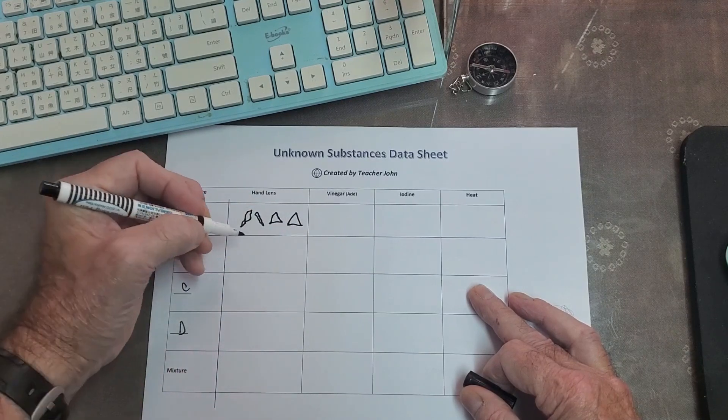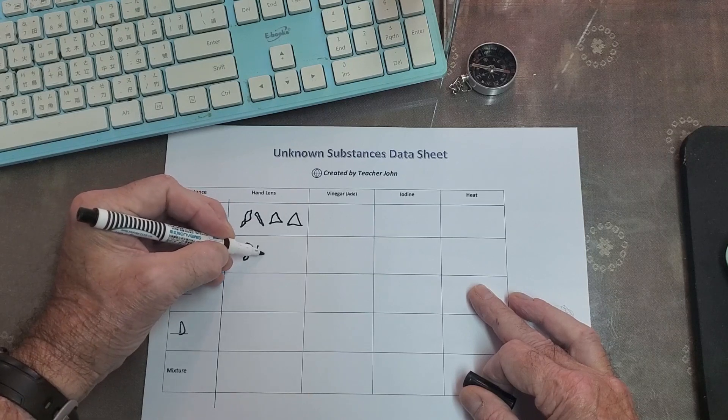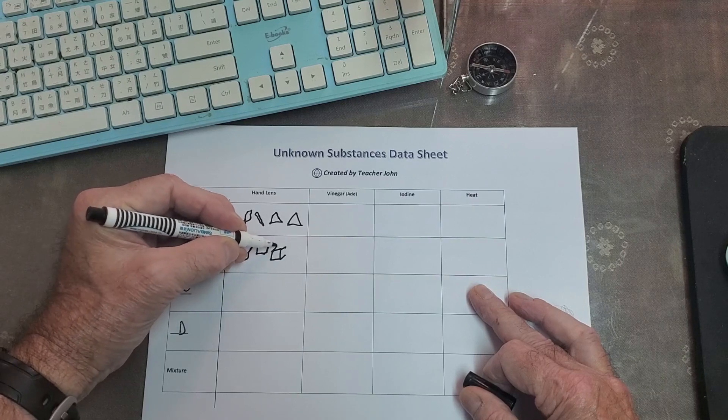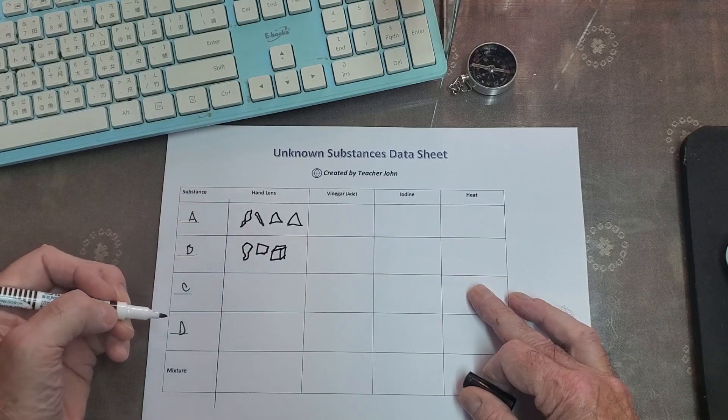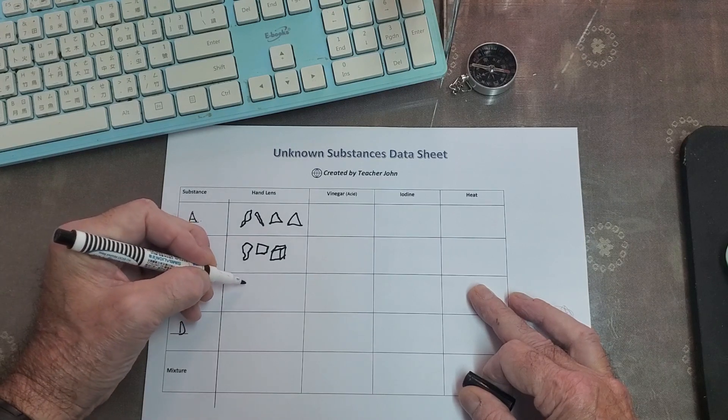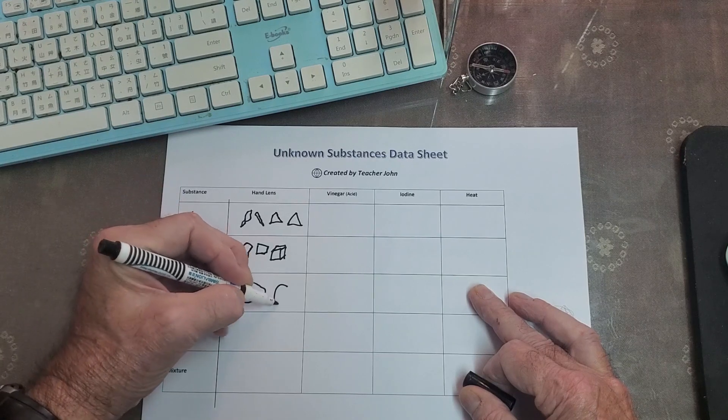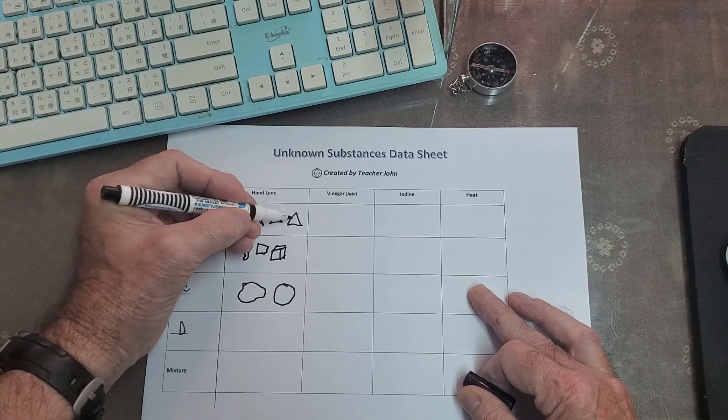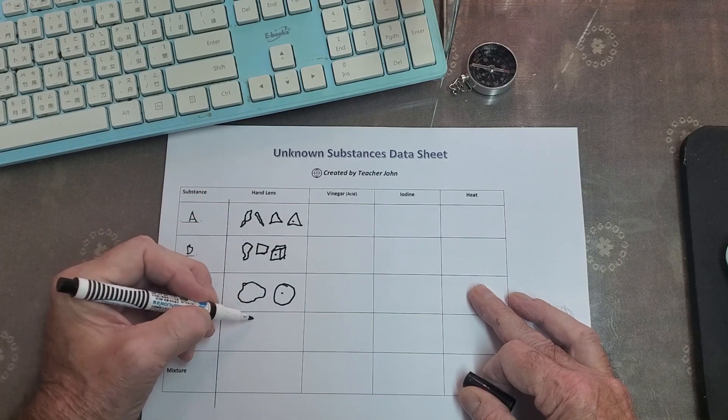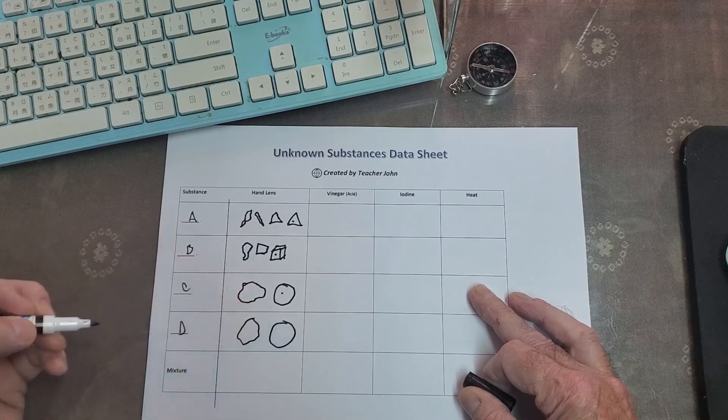I like to settle for a triangle. Then B, also crystal-y, similar, but more cube or square. And then C, really didn't have a shape. It's just the powder. I like to use a circle. So, I like to use a triangle, a cube, and a circle. And D is similar to C. Not really having a shape.